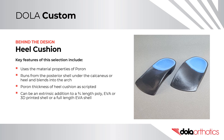The heel cushion runs from the posterior orthotic shell, under the calcaneus or heel, and blends into the arch. The pour-on thickness is prescribed by the practitioner. It can be used as an extrinsic addition to a three-quarter length poly, EVA, or 3D printed shell, or on a full-length EVA shell.